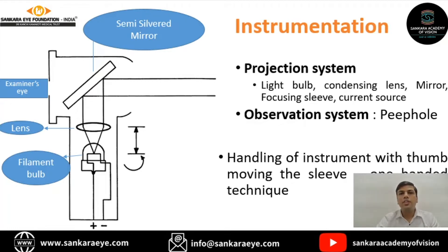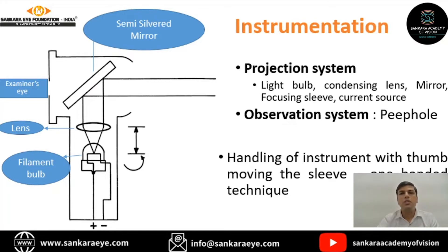The retinoscope is divided into two systems. The projection system includes the bulb, light source, condensing lens, mirror, and focusing sleeve. The observation system involves the peep hole through which the examiner observes. When handling the retinoscope, it is better to use the thumb — this is called the one-hand technique.